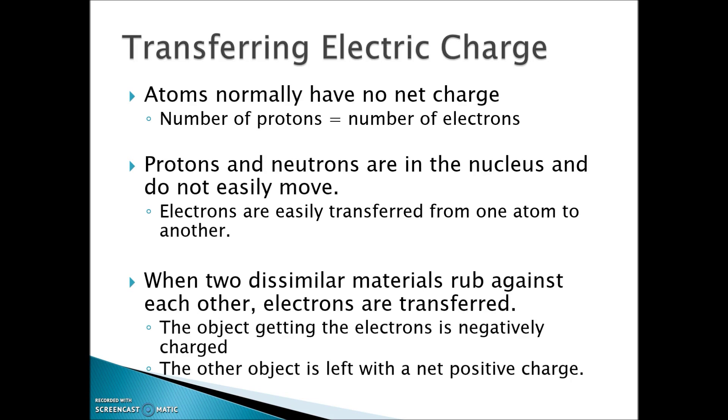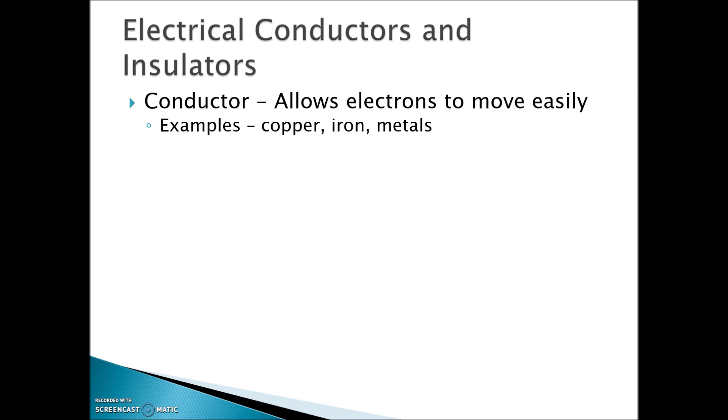Main thing: electrons move, not protons. Just real quick, a couple of definitions about conductors and insulators. An electrical conductor simply allows electrons to move throughout it. Copper, iron, most metals are good conductors. An insulator is basically just the opposite. It doesn't allow electrons to move easily. Plastics, rubber, things like that are very good insulators.